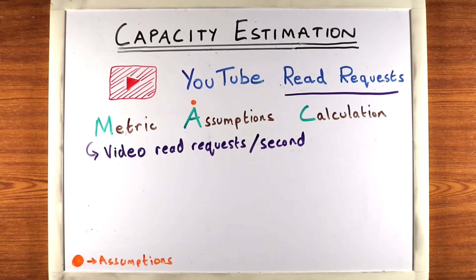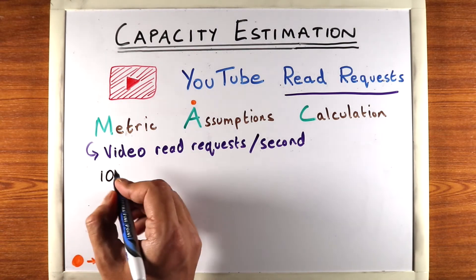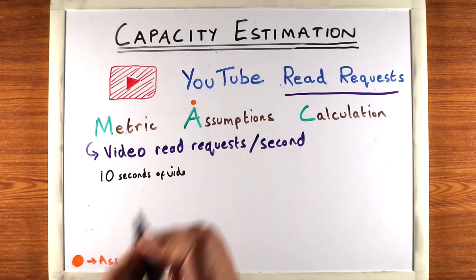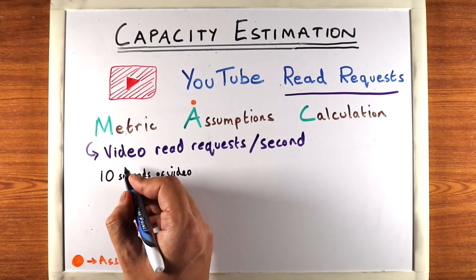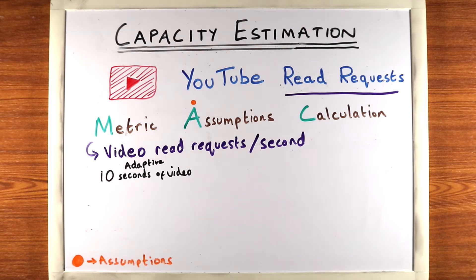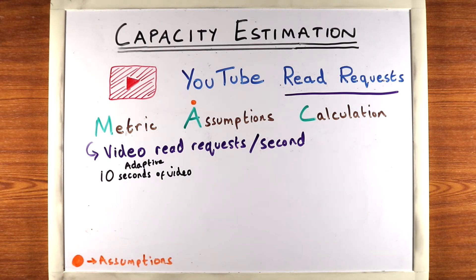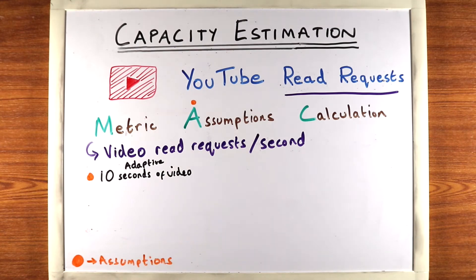One crucial assumption is that the system requests videos 10 seconds at a time — so 10 seconds of video per request. This is usually the case in today's video players that use adaptive streaming; they don't load the entire video at once, they load video in chunks. This 10-second number can differ in an actual system, but we'll assume 10 seconds because it's easy to do math with. In general, we'll try to pick numbers where the math is easy.